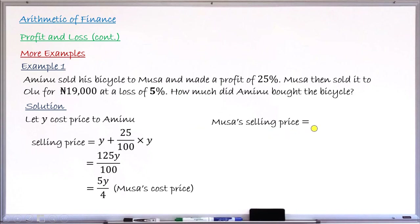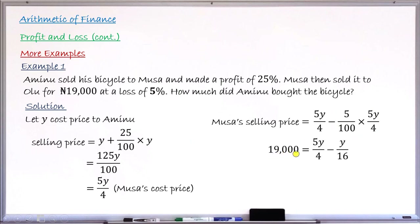The selling price, since it is a loss, is the cost price 5Y over 4 minus 5% of 5Y over 4. That 5% loss is a percentage of his cost price, which is 5Y over 4. We substitute the selling price with 19,000 and simplify: multiplying 5 over 100 by 5Y over 4 gives Y over 16, because 5 times 5 is 25, and 25 over 100 reduces to 1 over 4, and 4 times 4 is 16.